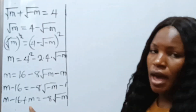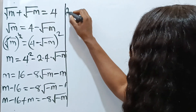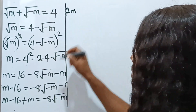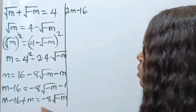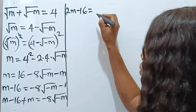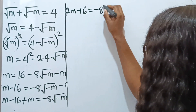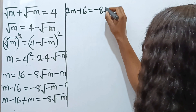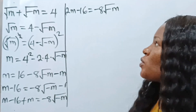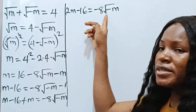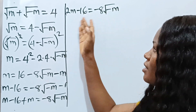m plus m gives us 2m, so we have 2m minus 16 is equal to negative eight square root of negative m. We still have a square root sign here, so let's square both sides of the equation to clear it.